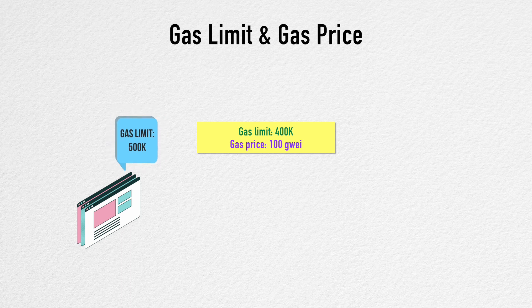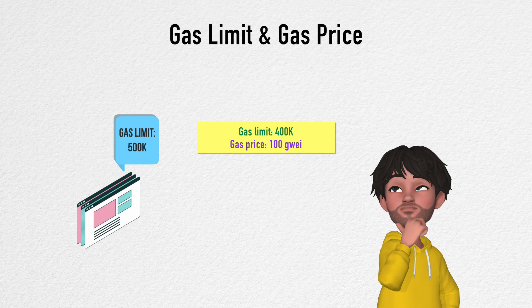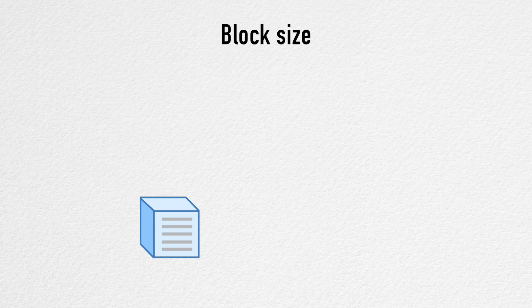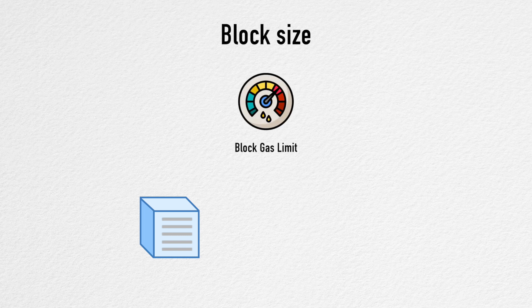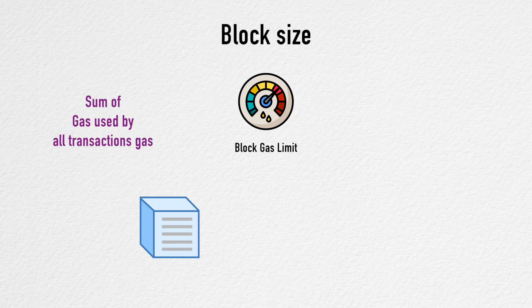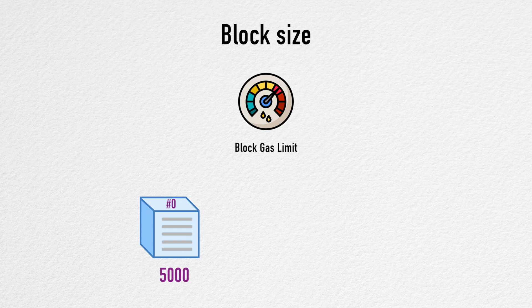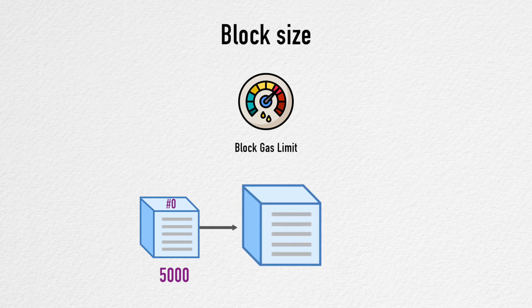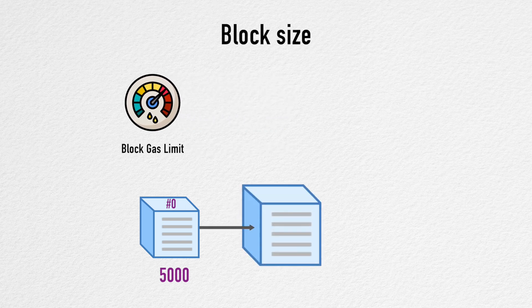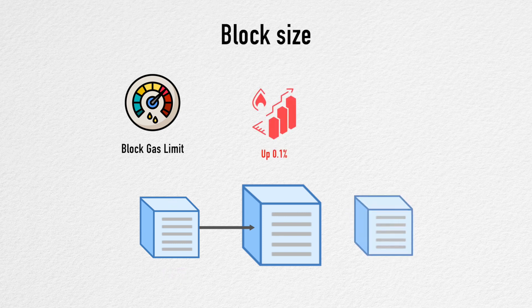The DApp you are using generally recommends how much gas each function is expected to consume, so you don't have to guess. Just like with Bitcoin, blocks on Ethereum also have a size limit. Each block must stick to the block gas limit, which is set by miners and the network collectively. The total gas expended by all transactions in a block must be less than the block gas limit. The block gas limit at block zero was initialized to 5,000, and any miner can change it by up to 0.1% in either direction from the parent block. Currently this is at 12.5 million.